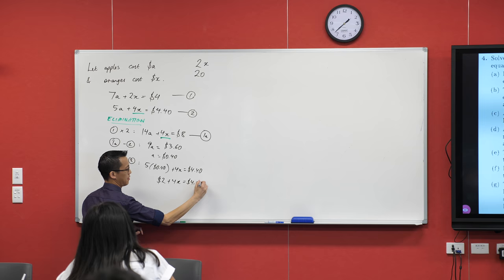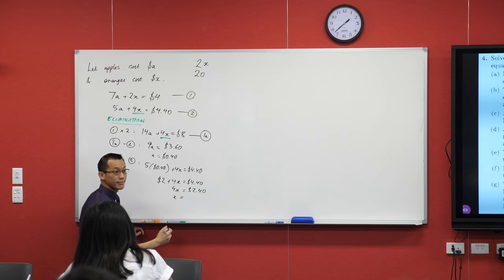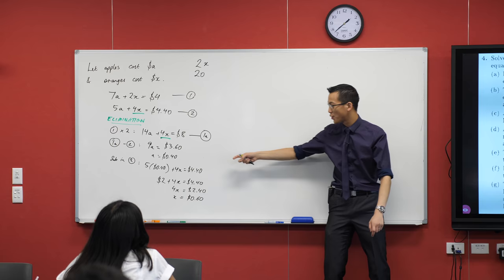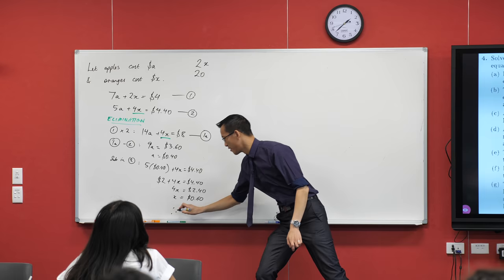What did you get as your final cost for your orange? $0.60. Now, what would you do with these two answers when you've got these and you're finished? What would you do next? Therefore, A equals to $0.60 and therefore, A equals to $0.60. Okay.